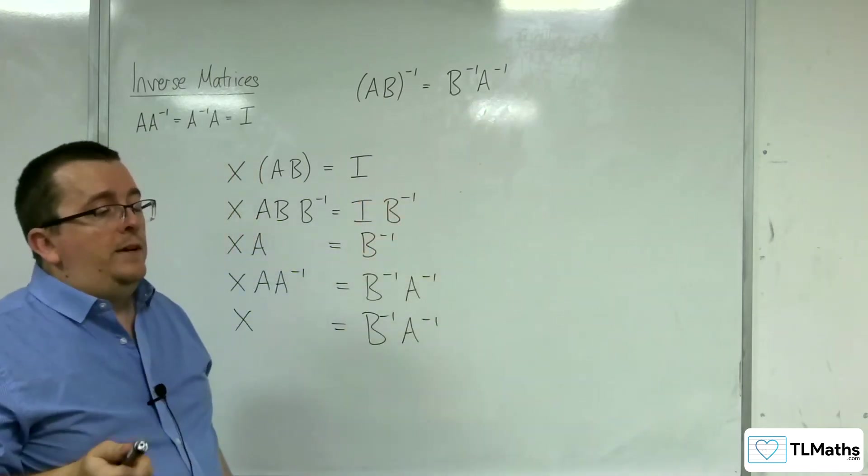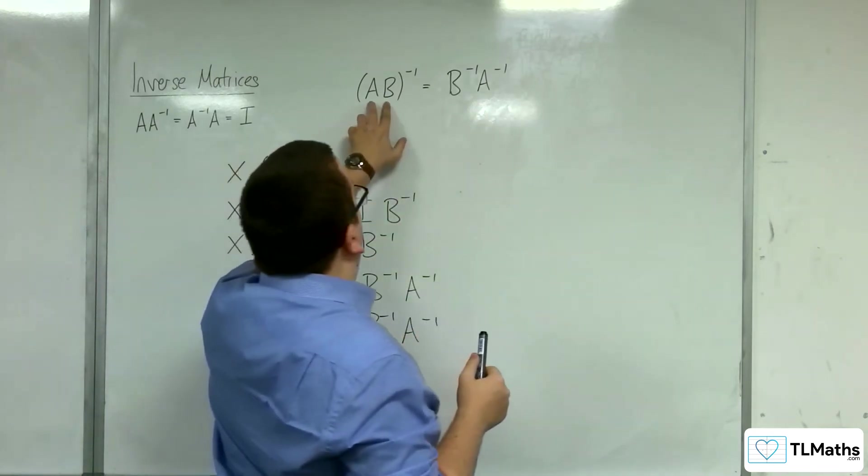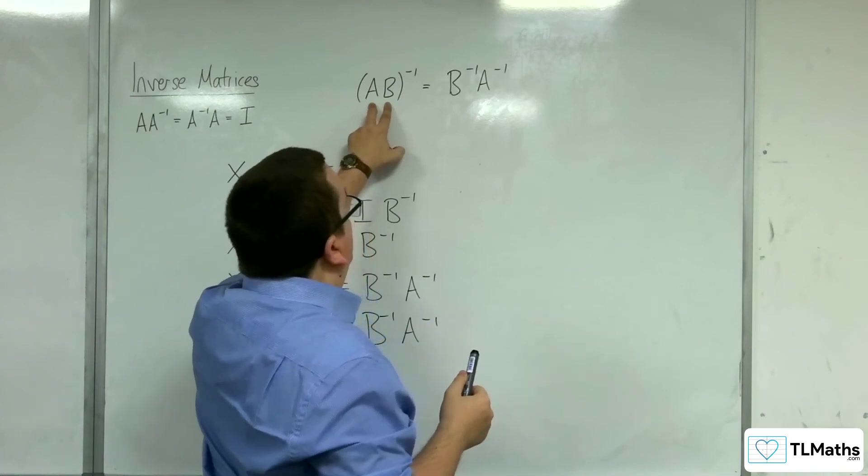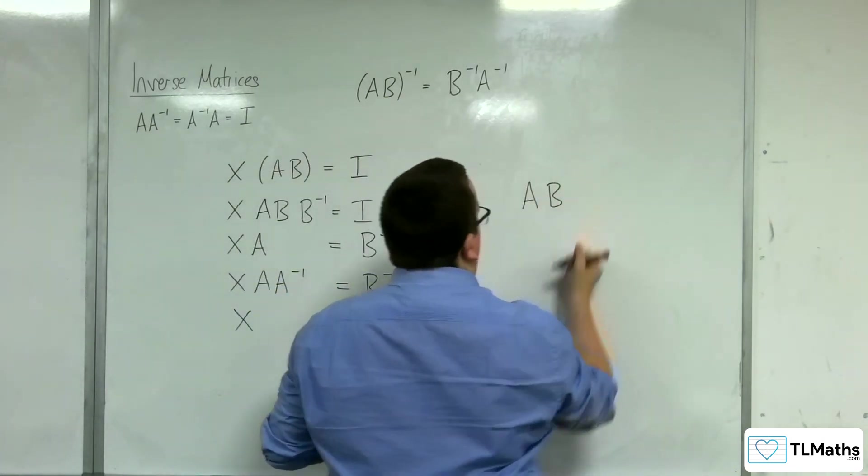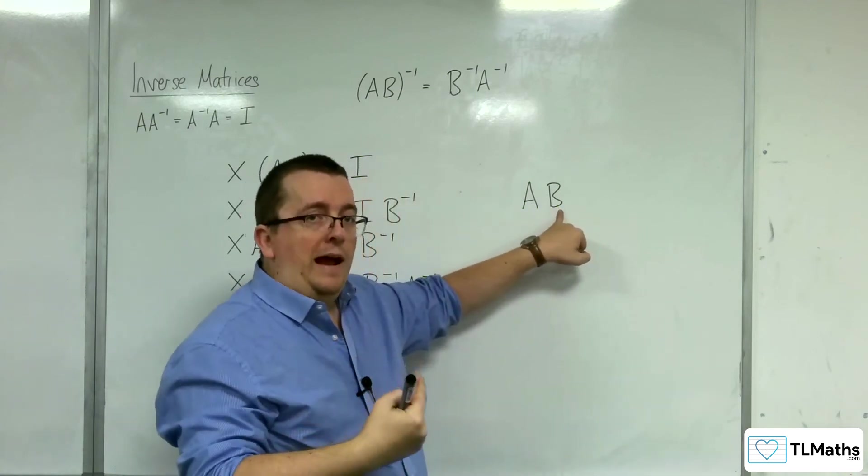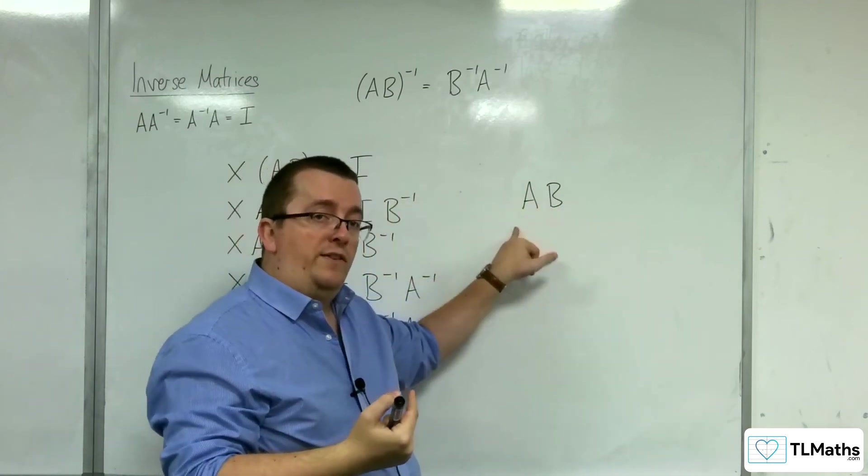And this makes sense, because remember the order in which you are doing things here. If you've got AB, then you are doing B first, and then A. Remember, it works from right to left.